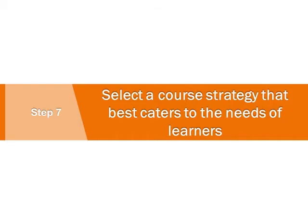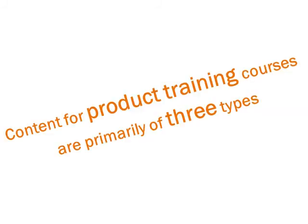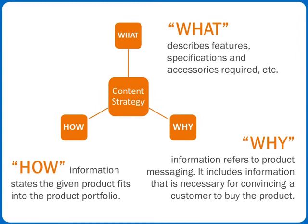Select a course strategy that best caters to the needs of learners. Content for product training courses is primarily of three types. 'What' information covers what the product is all about — its features, specifications and accessories required, typically included in product disclosures. 'How' information states how the given product fits into the product portfolio, and can include the target segment for the product. 'Why' information refers to product messaging — it includes information necessary for convincing a customer to buy the product, with focus on key benefits that a customer gets from using the product.